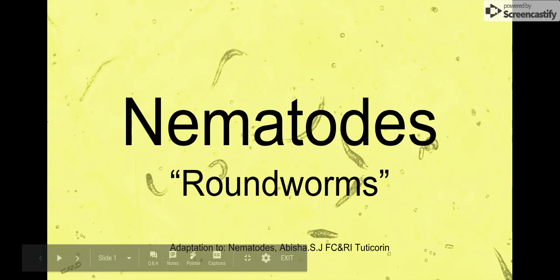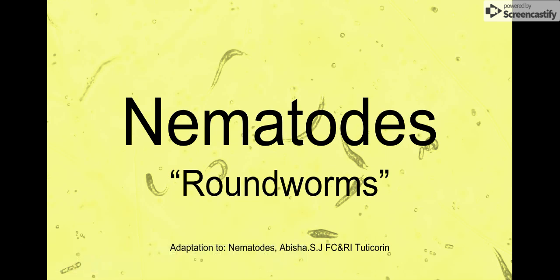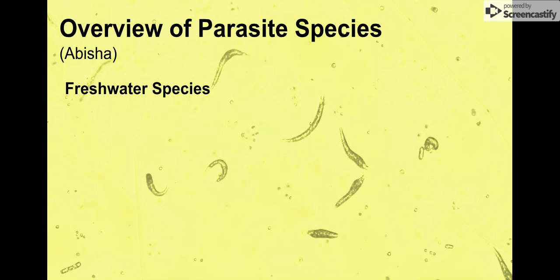Hi folks, here is a presentation on nematodes, the roundworms. A lot of the information is parallel with Abisha, so if you want to look more into that go right ahead. Today we will be looking at an overview of parasite species, covering three different categories, the first one being the freshwater species.